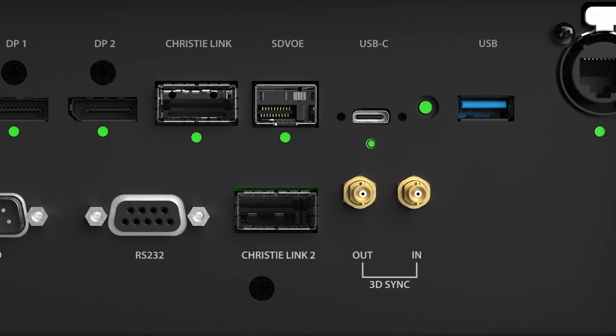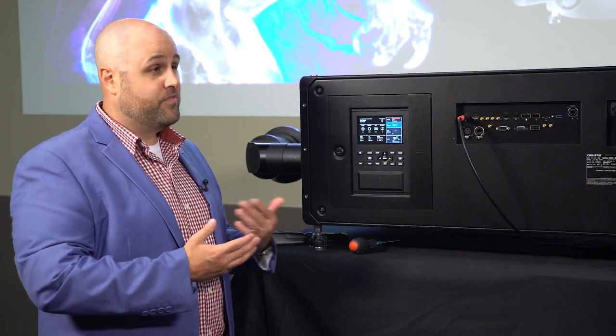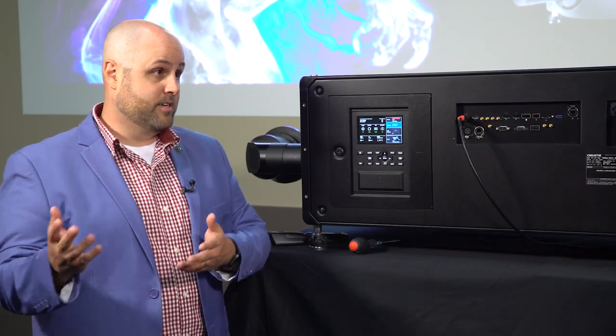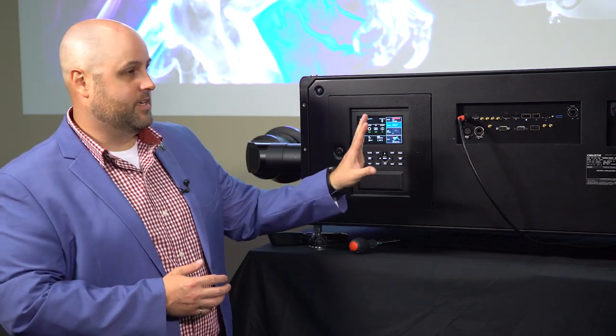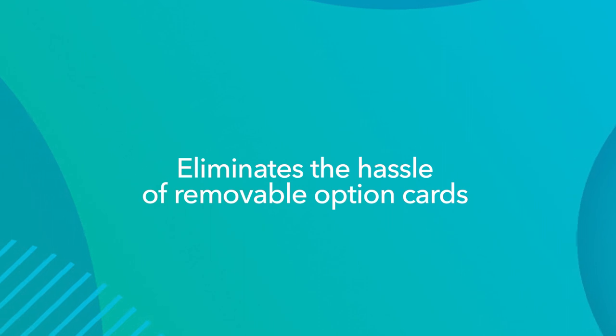Previously, with the option card base, the customer would have to configure the unit. They'd buy option cards based on their install. This really allows them to just have all the inputs that they need at their fingertips. So that way, if you're a rental stager, for example, you don't have to show up on site and find out that you're missing an option card of some sort.